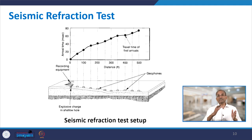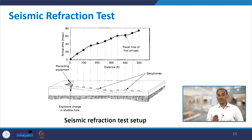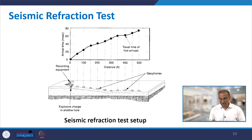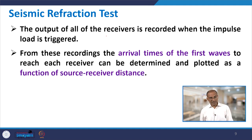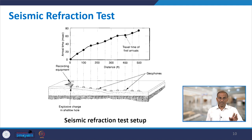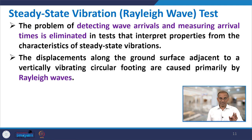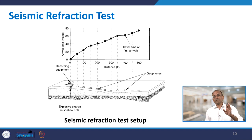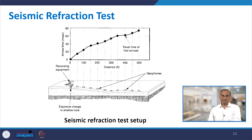Naturally arrival times increase as distance increases, but the relationship is not linear. We record the output of all receivers when the impulse load is triggered. From these recorded arrival times, we can calculate the shear wave velocity Vs. That summarizes the seismic refraction test.